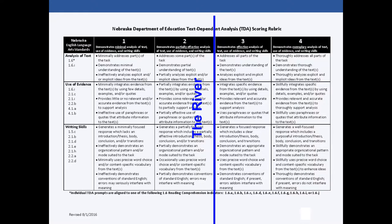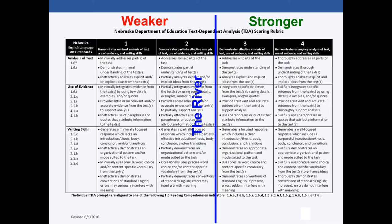Let's talk about the structure of the rubric. Notice that I have drawn a blue line between a scoring level of two and three — we affectionately call that the river. What this indicates is that a three and a four are a stronger performance, and a one or two are a weaker performance on our rubric. Please keep in mind that in the state of Nebraska, the state board indicated that a level three or above is what a student needs in order to meet the standard.